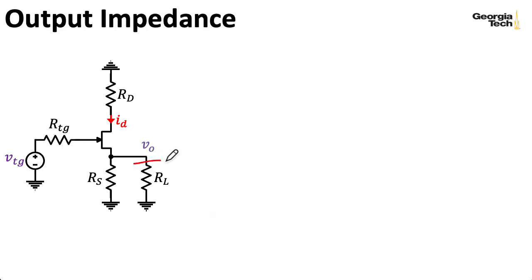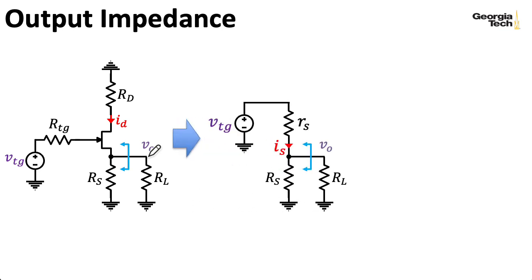We're not considering the load resistance to be part of the circuit. So I'm going to define the output impedance as looking this direction into the source node. So that's easy enough to compute. When I'm computing the Thevenin resistance, I short out this independent source. And I just have little RS in parallel with big RS. And this is a beautiful thing because RS is usually pretty small. So this kind of circuit has a fairly low output impedance.